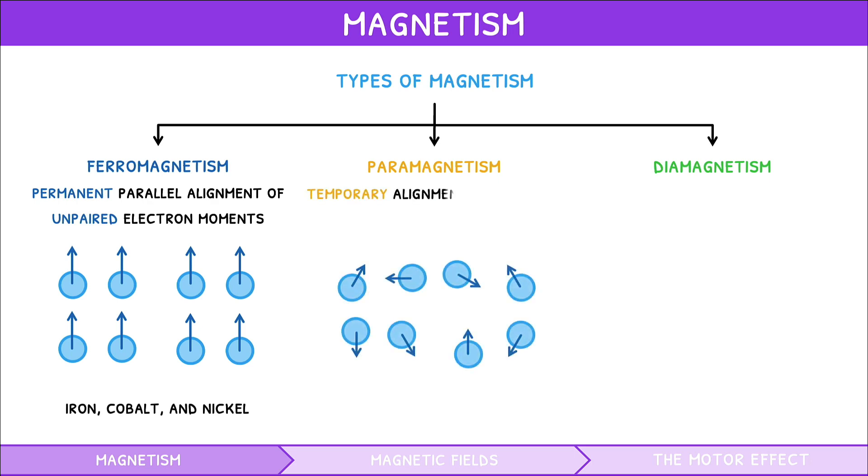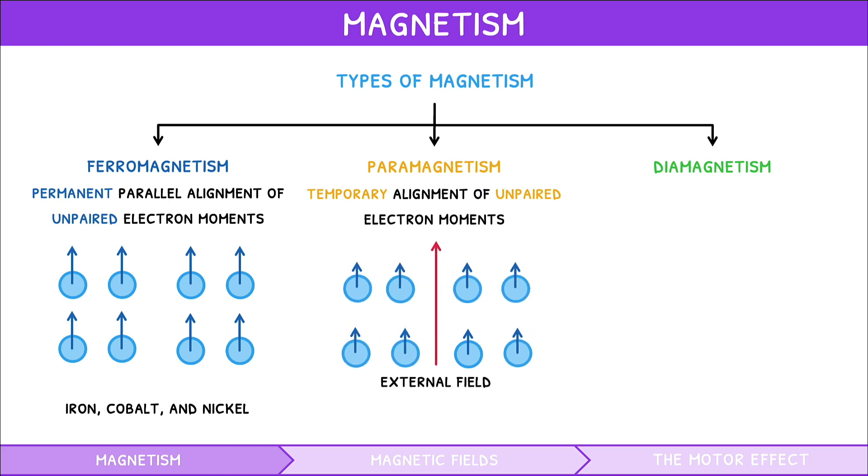Paramagnetism is the temporary alignment of unpaired electron magnetic moments by an external magnetic field. Common elements that have this are lithium, magnesium, and sodium.